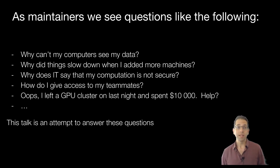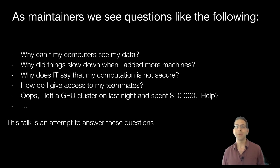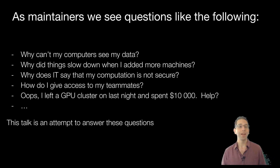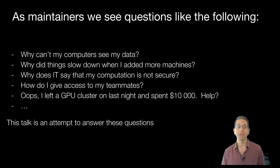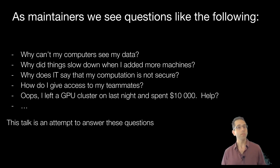As a Dask maintainer, I start my day with GitHub, and I get questions like the following: Why can't my computer see my data? It's there, I can access it — why can't my workers see it? Why do things slow down when I add more machines? Why does the network make things slower? Why does IT not let me run my computation? And one of my favorites: I accidentally left on a big cluster of computers, I spent $10,000 — help. I actually did this just last week. It wasn't 10 grand, but it was 20 machines running for a few days. It's a really common problem, especially on the cloud. So this talk is an attempt to answer these kinds of questions. We get these every day on the issue tracker, and we want to compile a list of them so people could understand why they occur, and figure out how to build empathy between data science and IT so we can start talking about these with a shared language.